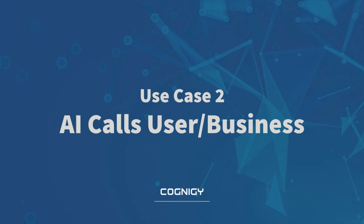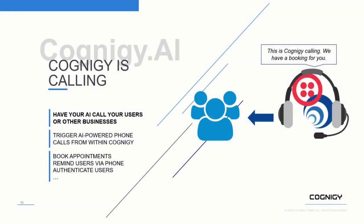The second use case is where the AI calls the user, or where the AI calls a business on the user's behalf. You can trigger an AI-powered phone call directly from within Cognigy, and then Twilio places the call, waits for the user or business to answer, and facilitates the conversation using Cognigy conversational AI. Use cases include booking appointments, reminding users via phone on a certain date, or authenticating users interacting through another channel like a web chat.